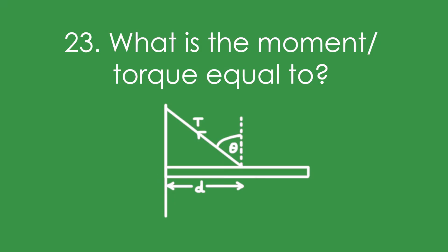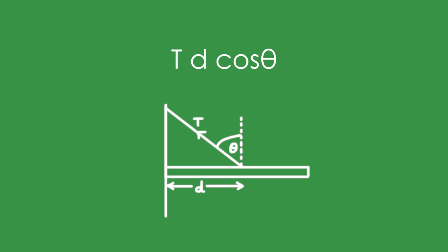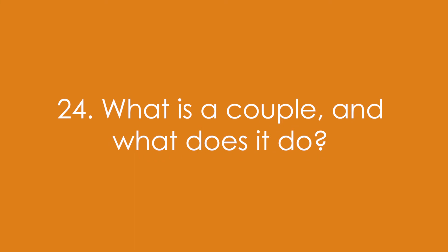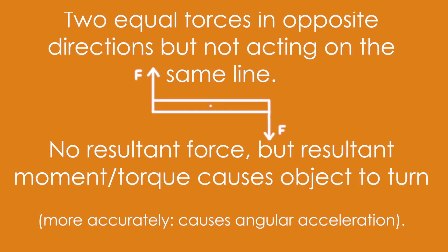Twenty-three, what is the moment here equal to? That is the moment of the tension. It's T, D, cos theta. Twenty-four, what is a couple, and what does it do? It's two equal forces that act in opposite directions, but not acting on the same line. That means that there's no resultant force, but there is a resultant moment, and that causes the object to turn. More accurately, it can change how fast it's turning.